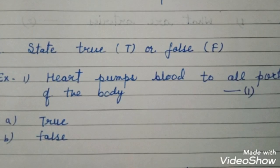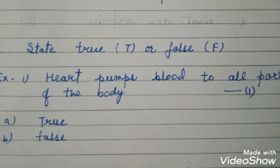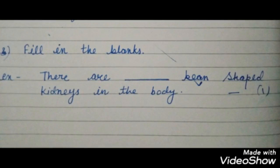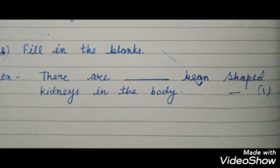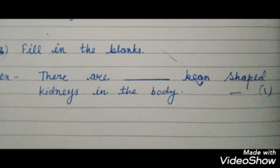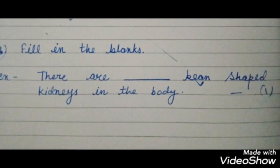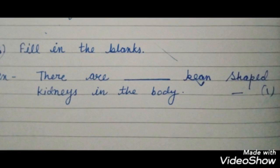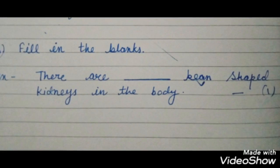Next, questions from 7 to 9 are filling the blanks. For each correct answer you will get one mark. For example, there are blank being shaped kidneys in the body. So you'll have to submit the answer within two minutes and you will get one mark for correct answer.